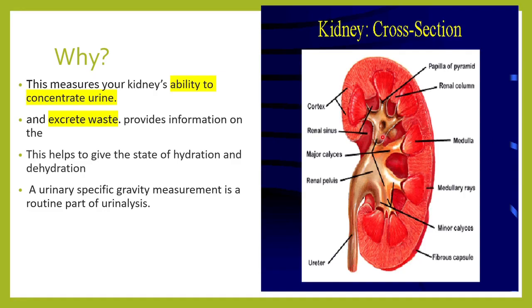Kyu chahiye humko specific gravity? Specific gravity humko batata hai ki kidney kitna urine ko concentrate karne ki kshamata rakhta hai — kidney theek se kama kar raha hai ki nahi. If there is less water, wo solutes ko preserve kar lega kya? Agar zyada pani pee liya, to whether it is able to absorb the solutes or sending them along with the water. To know how the kidney is functioning — kidney urine ko concentrate kar pa raha hai ki nahi — is property ko jaanne ke liye we need the specific gravity. It will also tell you whether the state of hydration or dehydration.